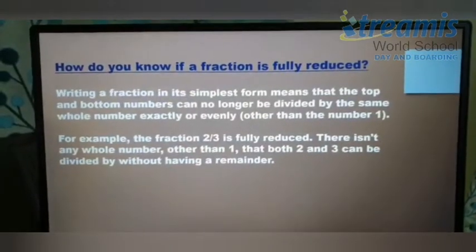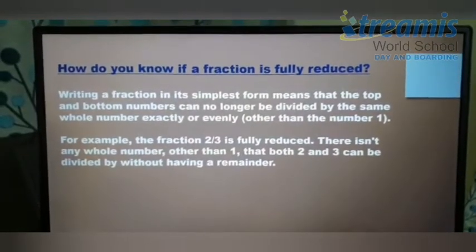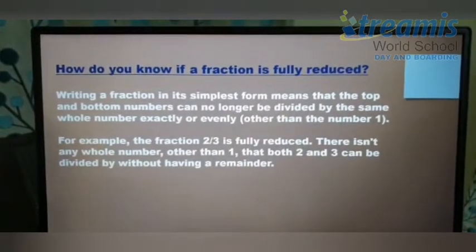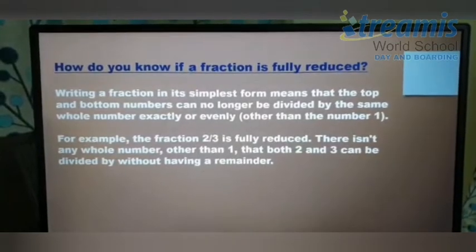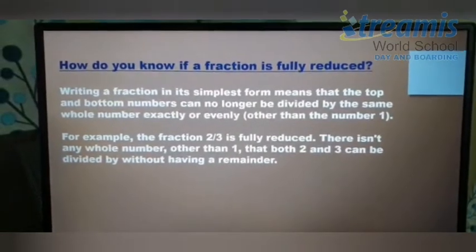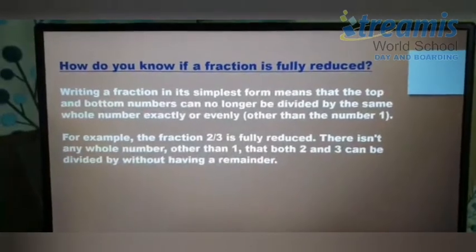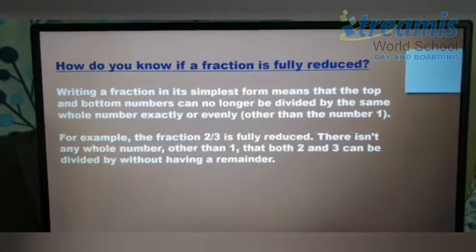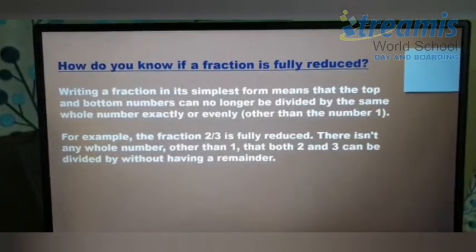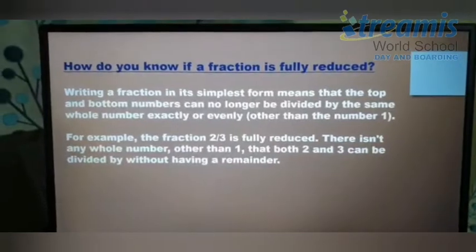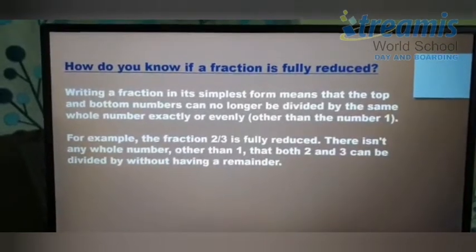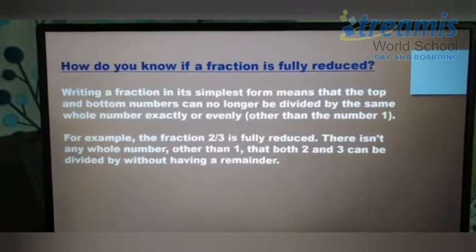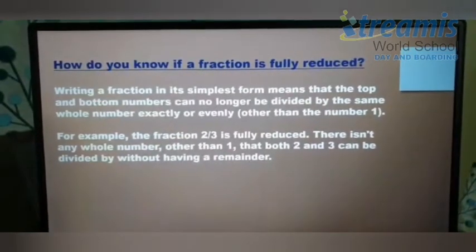How do you know if a fraction is fully reduced? Writing a fraction in its simplest form means that the top and bottom numbers can no longer be divided by the same whole number exactly or evenly other than the number 1. So for example, children, the fraction 2/3 is fully reduced. And how? Because there isn't any whole number other than 1 that both 2 and 3 can be divided by without having a remainder.